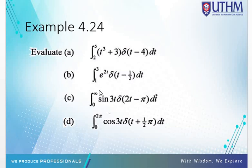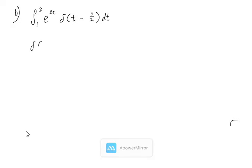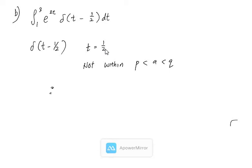The second example: the integral from 1 to 3 of e^(2t) delta(t minus 1/2) dt. Here delta(t minus 1/2) means the impulse occurs at t equal to 1/2. Checking against the limits p equals 1 and q equals 3, the value t equals 1/2 is not within the limits. Therefore, the integral from 1 to 3 of e^(2t) delta(t minus 1/2) dt equals 0. If the impulse location is not within the limits, the result is 0.